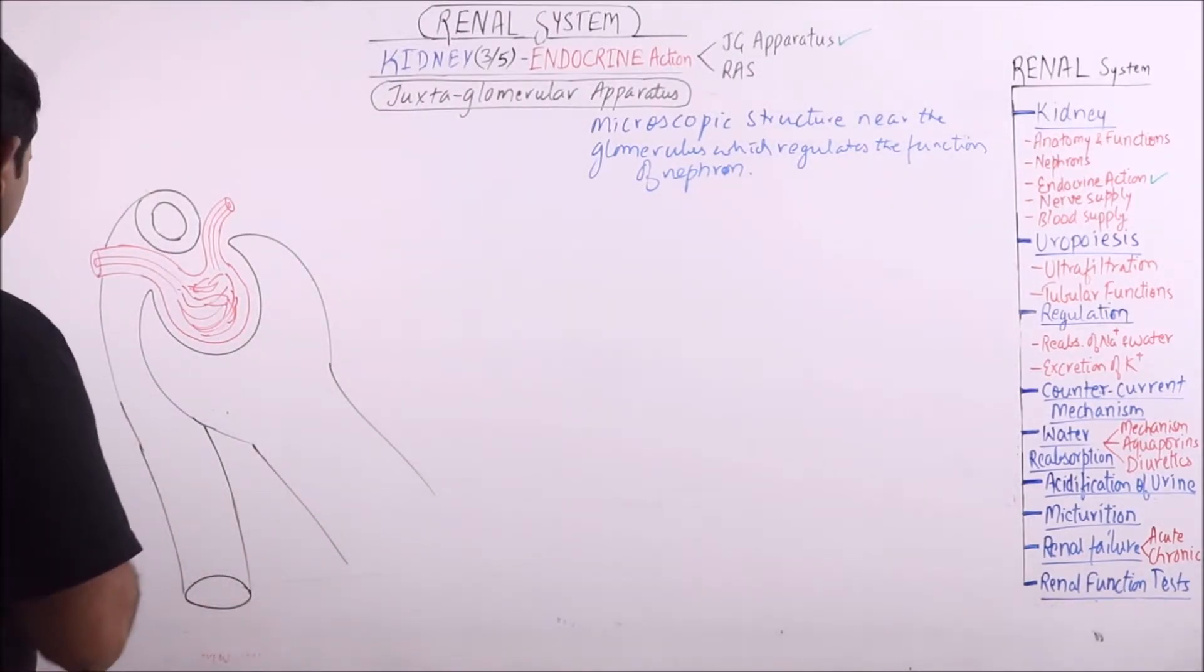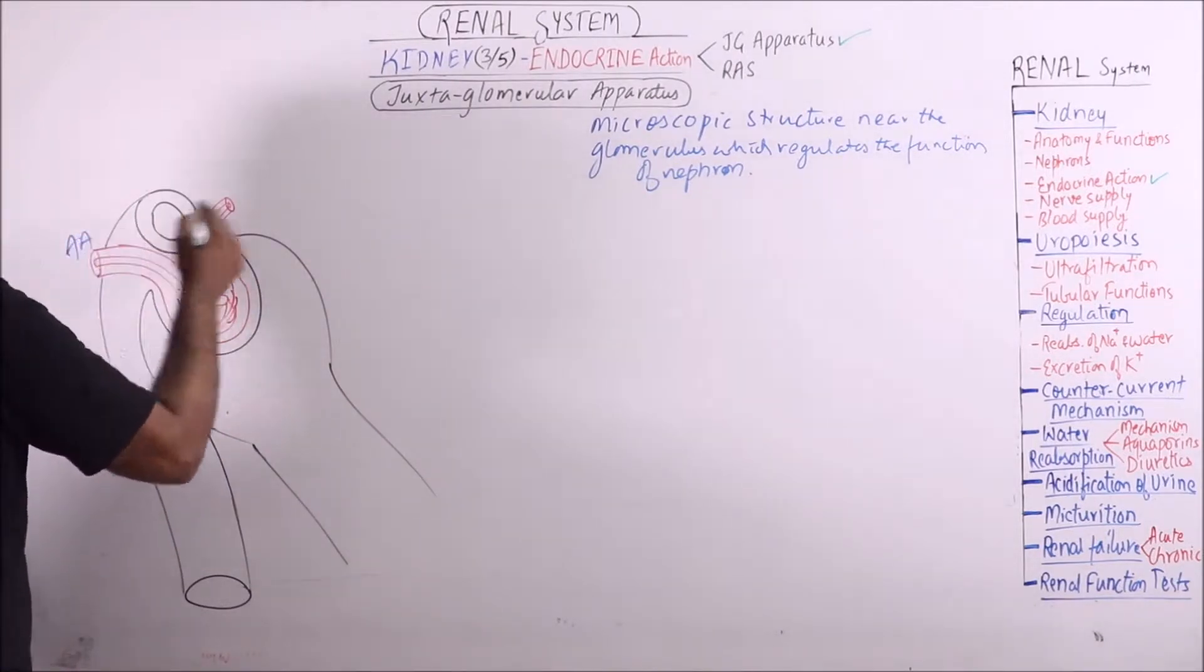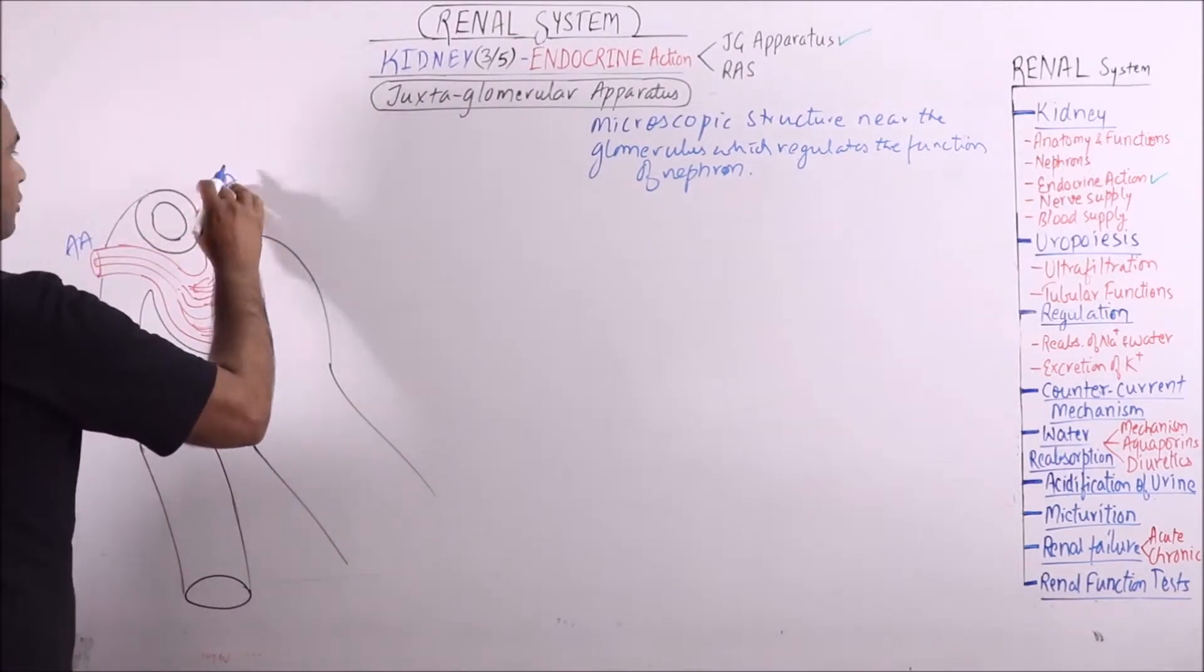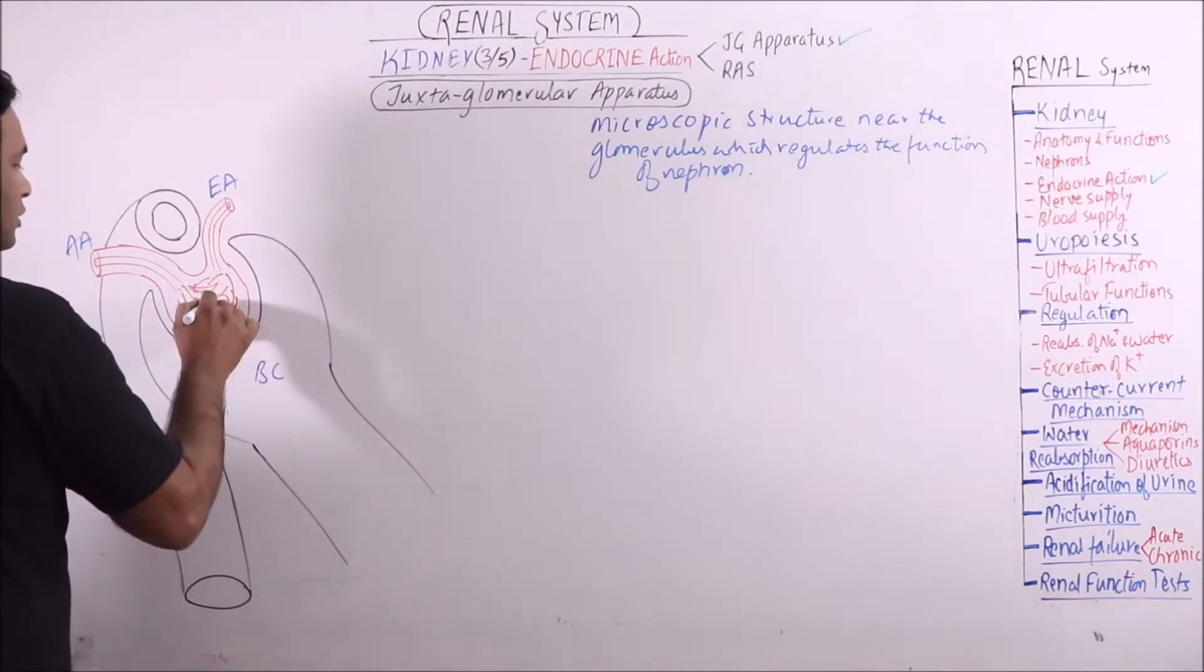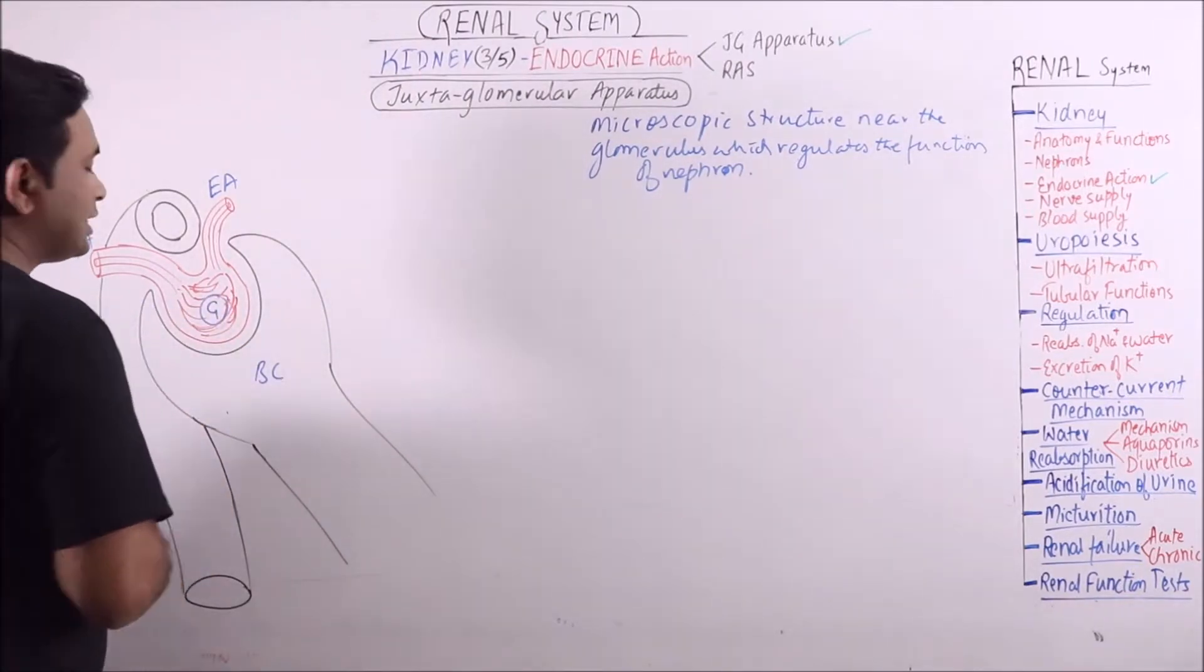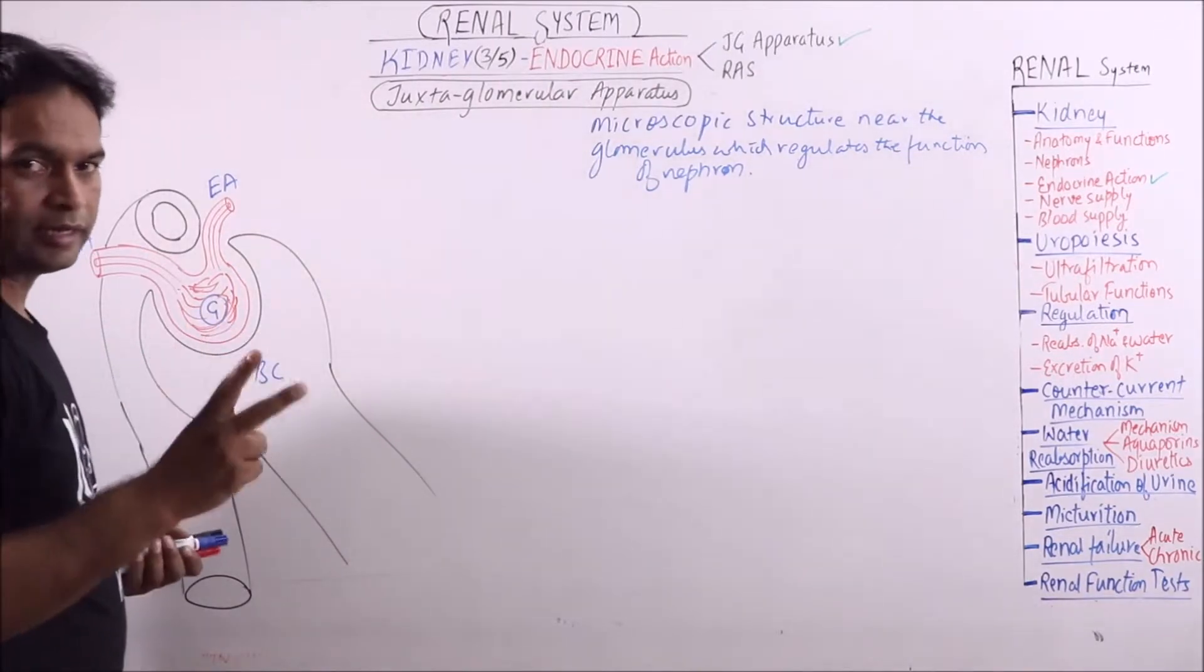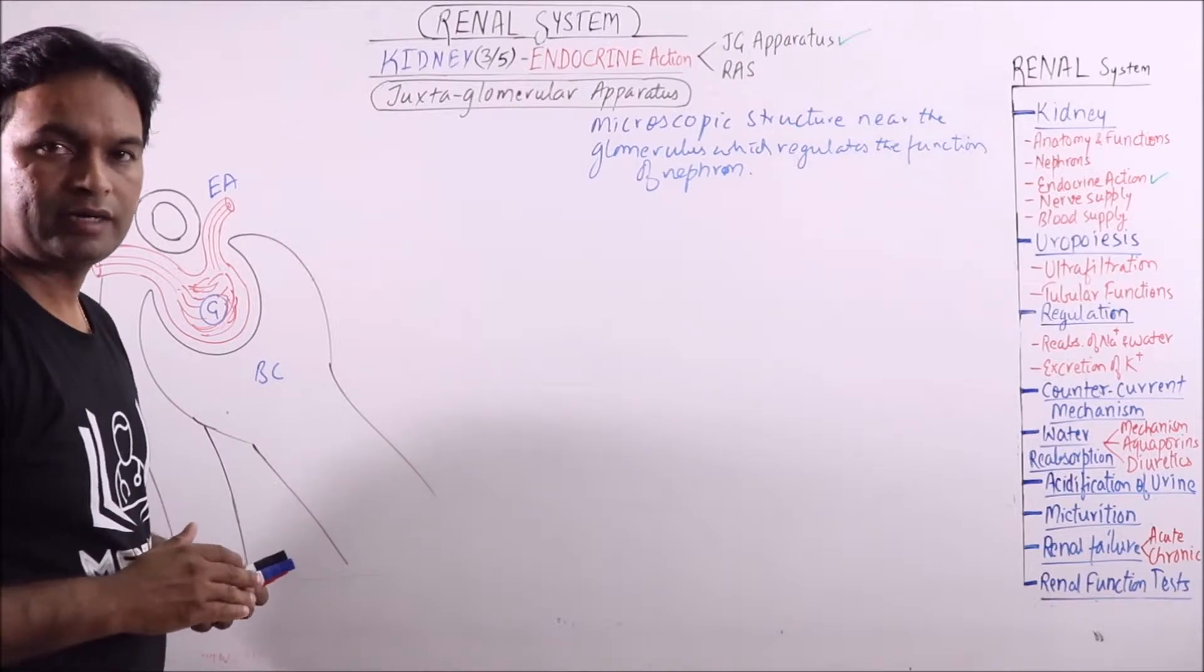First component is, this is efferent arteriole, this is Bowman's capsule, this is glomerulus. And we know that in arteriole there are two linings.